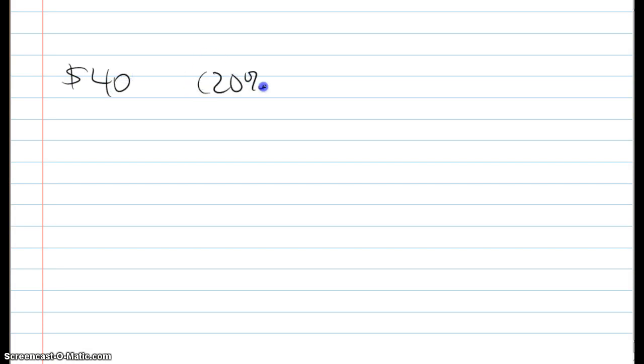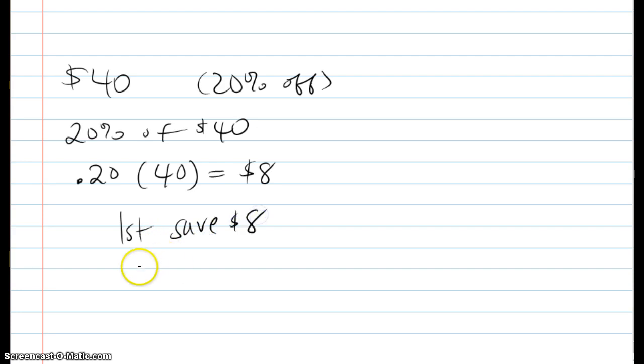So we've got the $40. I've got 20% off. So that means I'm going to take 20% of the $40, which means I'm going to take 0.20 and multiply it with 40. That is going to give me $8. So first, I'm going to save $8. So my sale price is going to be the $40 minus the $8. So I'm going to pay $32 for the pants.